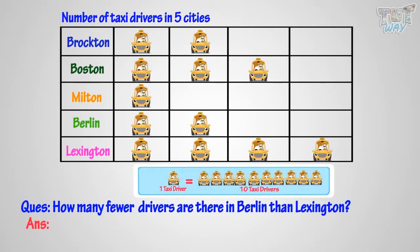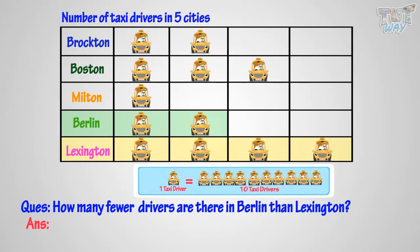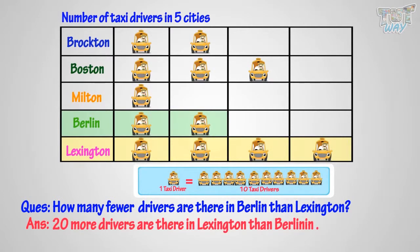Question 5: How many fewer drivers are there in Berlin than Lexington? Let's figure it out. There are two driver symbols against Berlin and four driver symbols against Lexington. So, four minus two equals two — there are two more driver symbols against Lexington. We know one symbol stands for ten drivers, so two times ten equals twenty. There are twenty more drivers in Lexington than in Berlin.